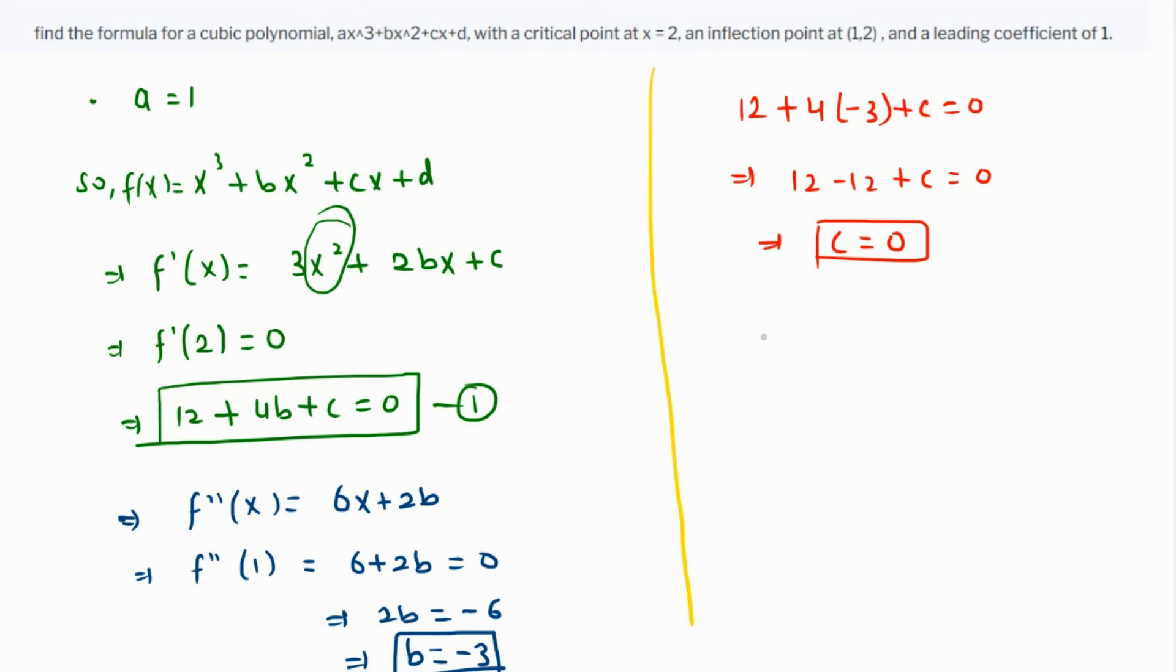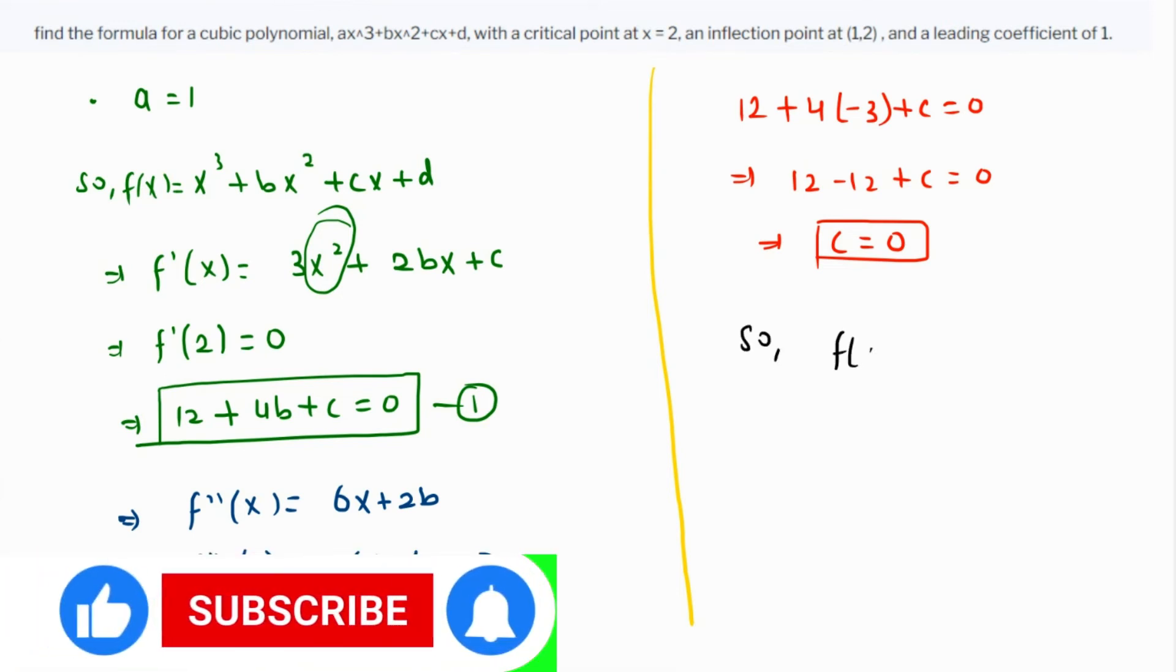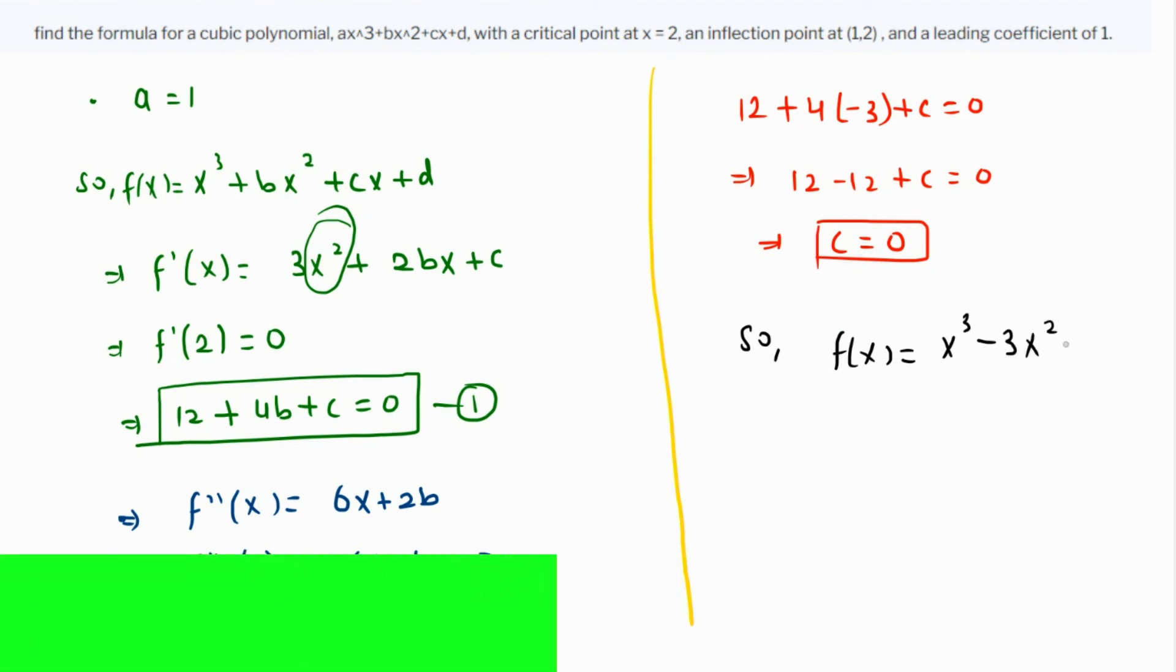With these values, the function becomes f(x) = x³ - 3x² + d, where d remains to be found.